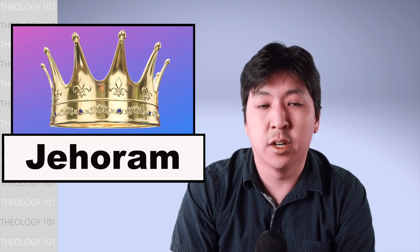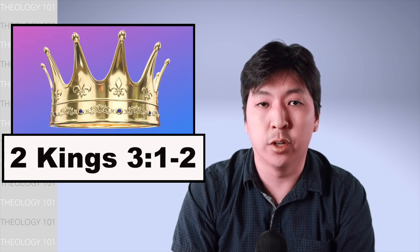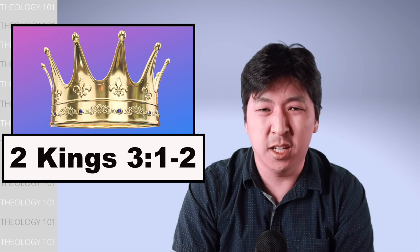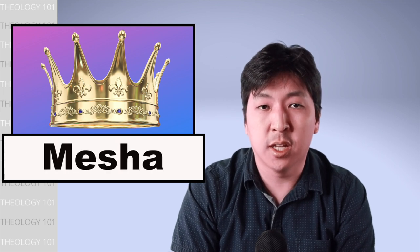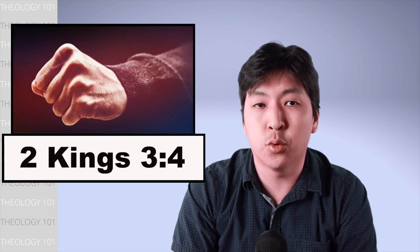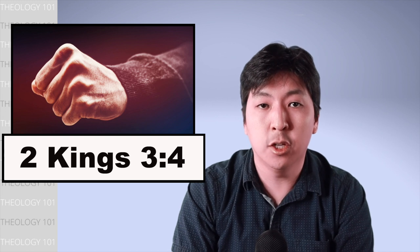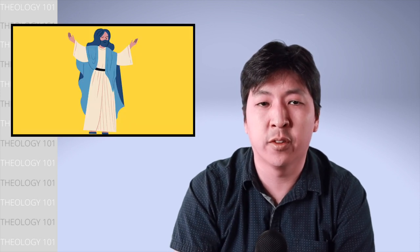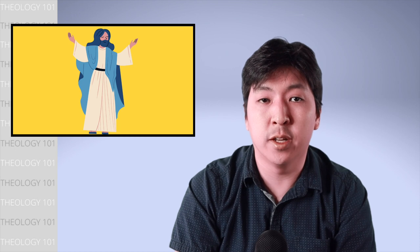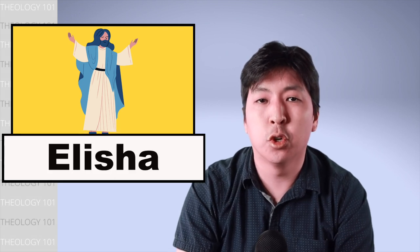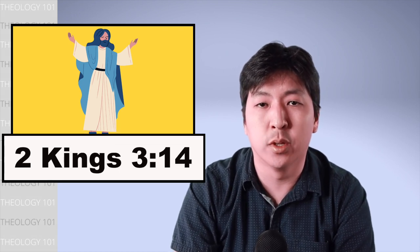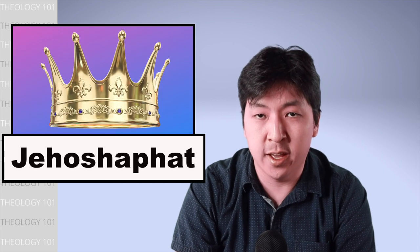Jehoram, another son of Ahab, became king over Israel and reigned for 12 years and did evil in God's eyes. Mesha, the king of Moab, rebelled against Israel after Ahab died. So King Jehoram recruited King Jehoshaphat from Judah along with the king of Edom to fight Moab. Jehoshaphat wanted to ask the prophet of God for help, and one of the king's servants mentioned Elisha. Elisha told Jehoram that he wants nothing to do with him, but for the sake of Jehoshaphat, he would help.